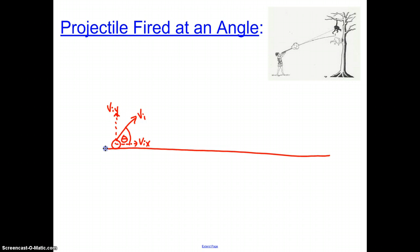Using trig, we can calculate these individual components. VIX is adjacent to the angle, and if we draw the right triangle made by this diagram, VI would be the hypotenuse. So the trig function that relates VIX, theta, and VI is cosine. Doing the algebra, VIX equals VI times the cosine of theta. Similarly, VIY would be opposite the angle theta, with VI as the hypotenuse. So the trig function that relates VIY and theta is sine. Solving for VIY, it equals VI sine theta.